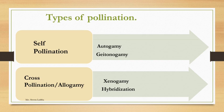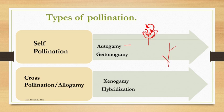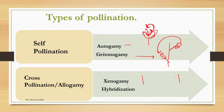Autogamy is the transfer of pollen grains from the anther to the stigma of the same flower. If the pollination is taking place from the anther to the stigma of the same flower, it is autogamy. If there is one plant with two flowers and the transfer of pollen grains takes place from anther to stigma of another flower but on the same plant, it is called geitonogamy.